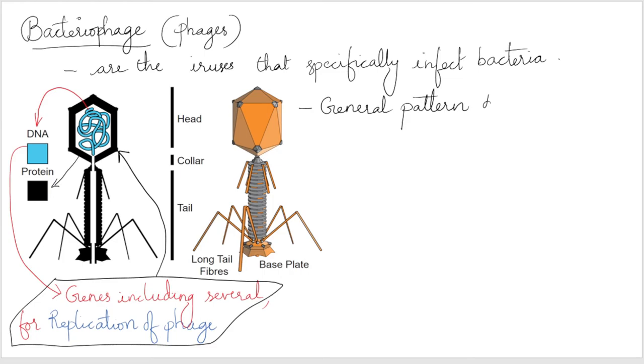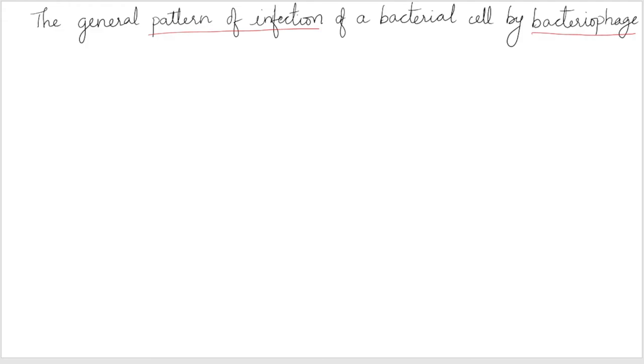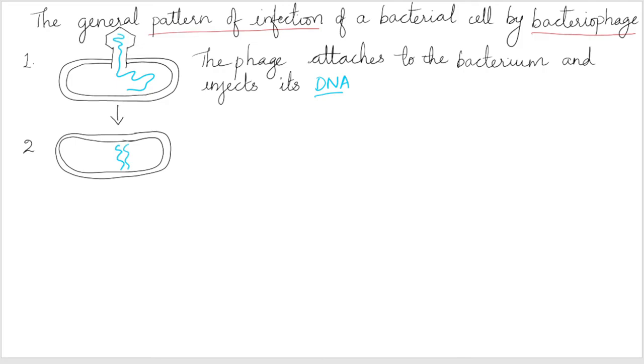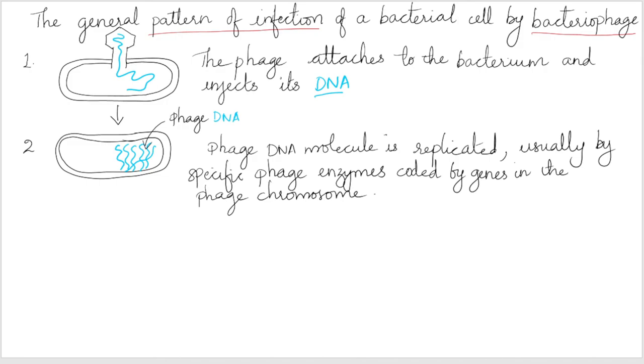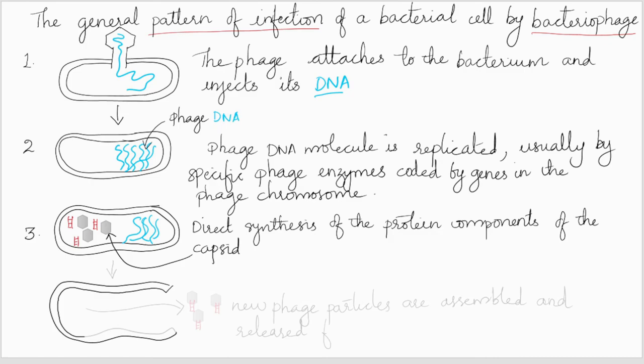For all types of phages, the general pattern of infection is the same, which is a three-step process. In the first step, the phage particle attaches to the outside of the bacterium and injects its DNA into the cell. Then the phage DNA molecule is replicated, usually by specific phage enzymes coded by genes in the phage chromosome. Then other phage genes direct synthesis of the protein components of the capsid, and new phage particles are assembled and released from the bacterium.